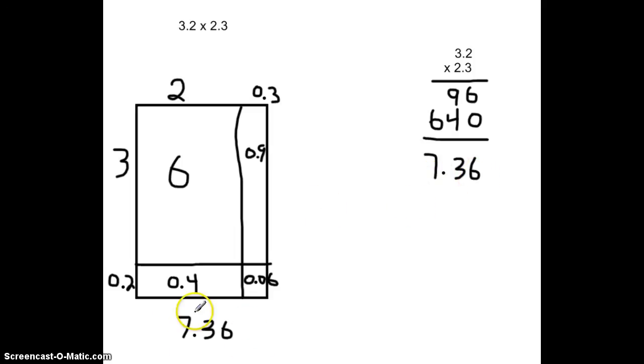So, we can see we still get our 7.36. Once again, looking at how these connect, our 0.06 here is the same as this number here, this 6. Our 0.9 is the same as this 9. And if we look, when we added this up in this column, it is actually equal to 0.9. And I should have said the 6 is actually 6 hundredths.